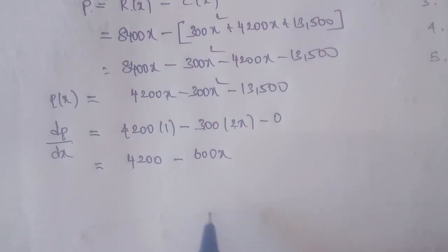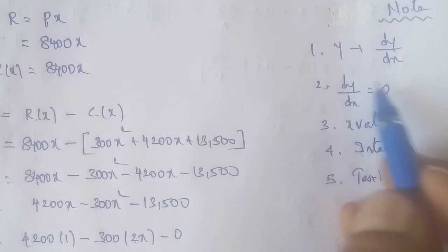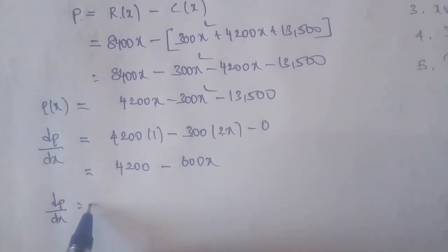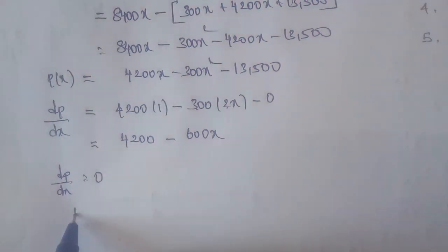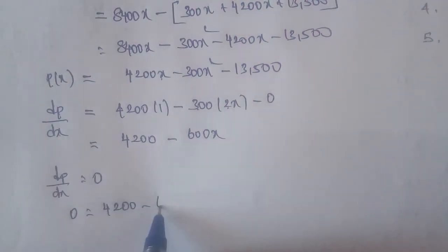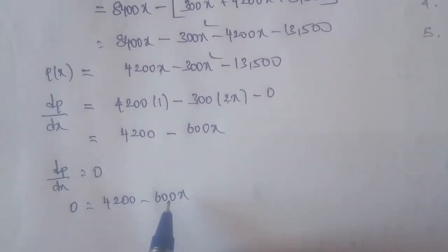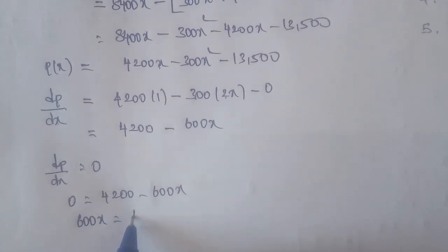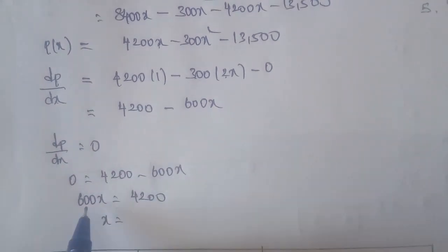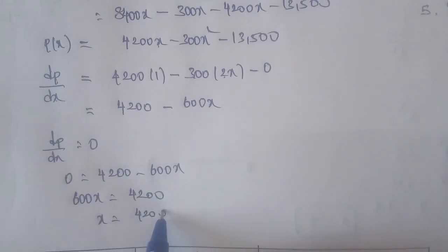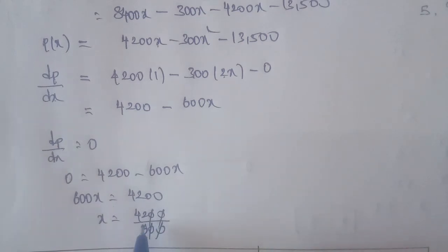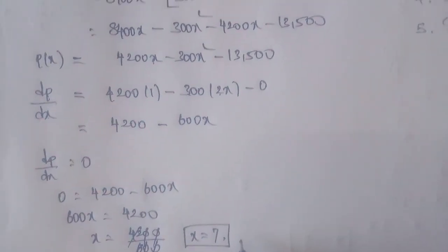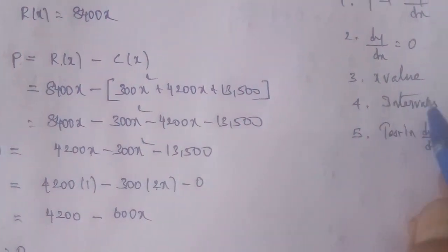Setting dP/dx equal to 0: 4200 minus 600X equals 0. Solving, 600X equals 4200, so X equals 4200 divided by 600. Cutting 42 by 6 and simplifying gives X equals 7. We will now apply the number line and intervals based on this critical point.